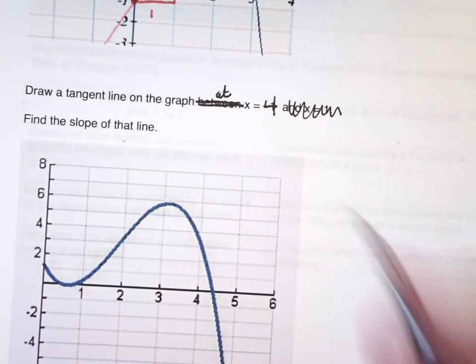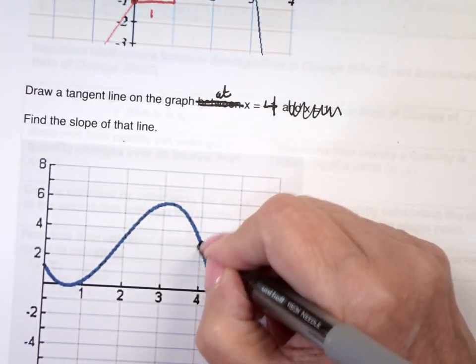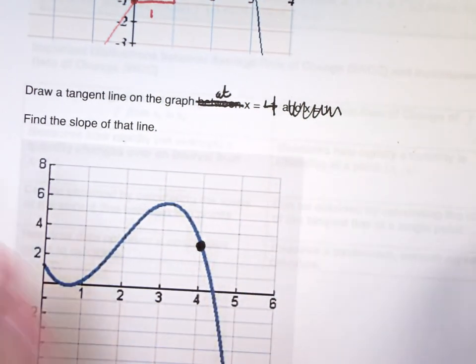And now, I find x equal 4. Here's my graph, right there. There's the point I'm interested in, for the tangent.